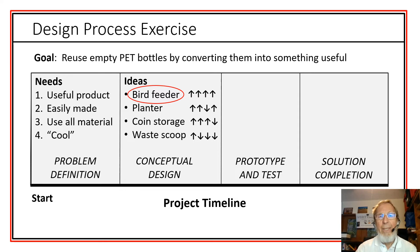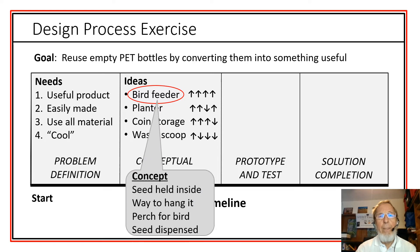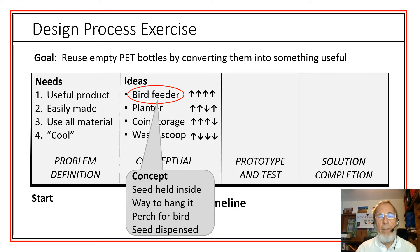We begin to see that the bird feeder seems to best meet the needs we identified, so that's an idea worth pursuing. We need to develop a conceptual solution — what would that bird feeder contain? It needs to be able to hold seeds to feed the birds, a way of hanging it in a convenient location, a place for the bird to perch for eating, and ideally it will dispense seed continuously. This gives us a concept that we want to test further.